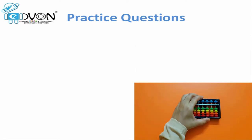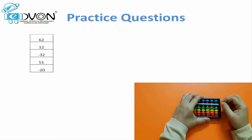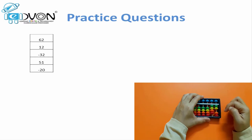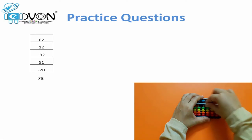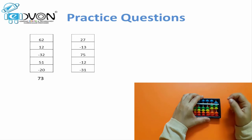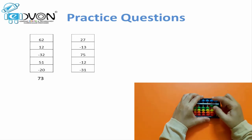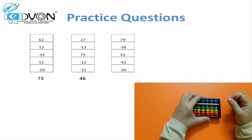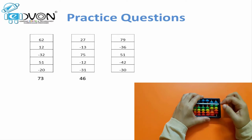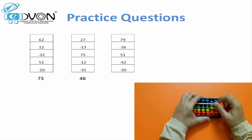Let's practice for different values on abacus. First question: 62, plus 12, minus 32, plus 51, minus 20 — answer 73. Next question: 27, minus 13, plus 75, minus 12, minus 31 — answer 46. Don't forget to make your abacus 0. Next question: 79, minus 36, plus 51, minus 42, minus 30 — answer 22.